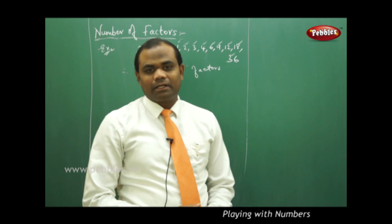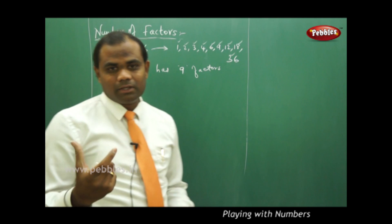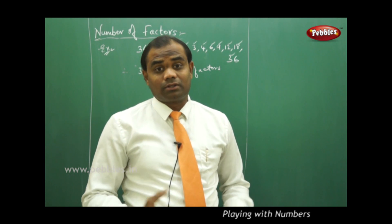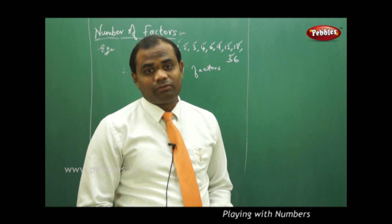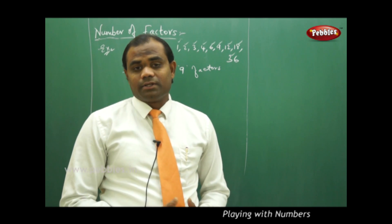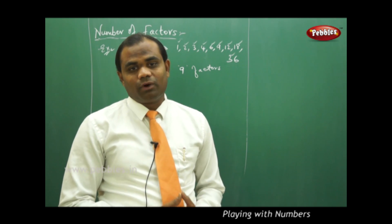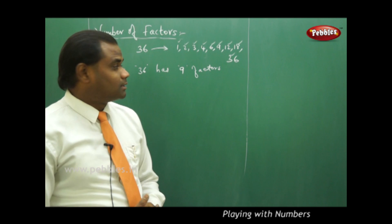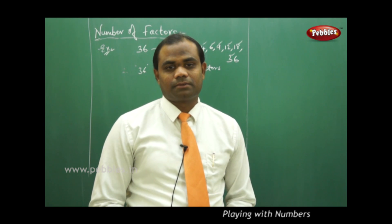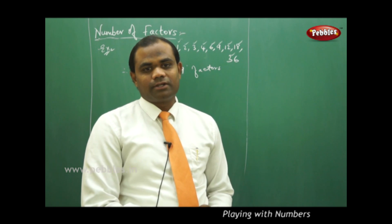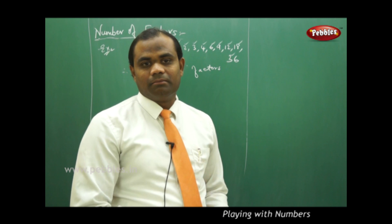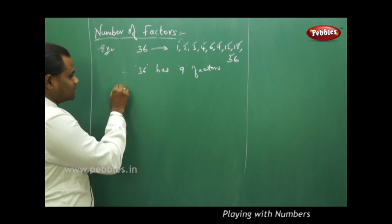Finding the number of factors for a 2-digit or smaller number is quite easy. But when dealing with a very large number — one with 100 or 1000 digits — finding the number of factors cannot be done so easily. So we derive a formula to find the number of factors for any number, however large or small. For this, we reintroduce the concept of primes, since prime numbers are closely associated with finding the number of factors. The least prime is 2.